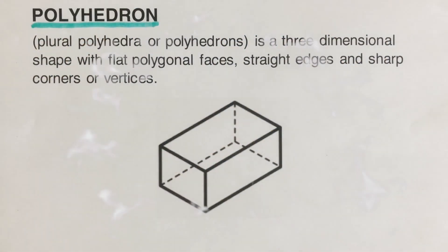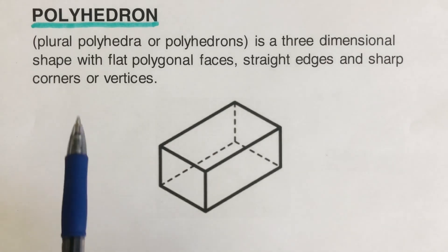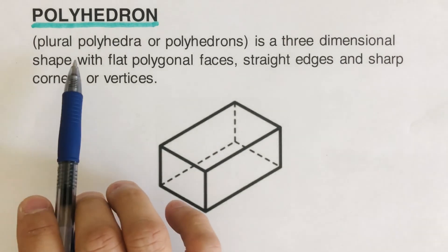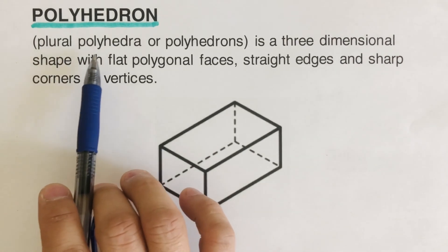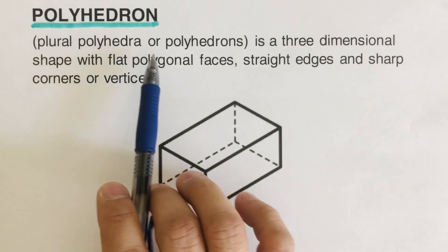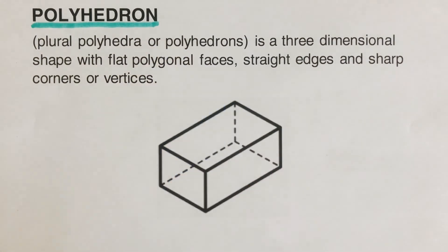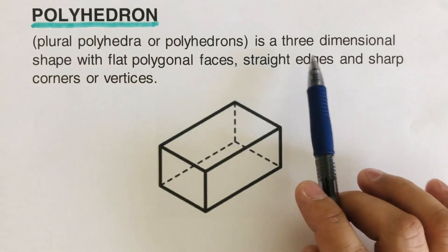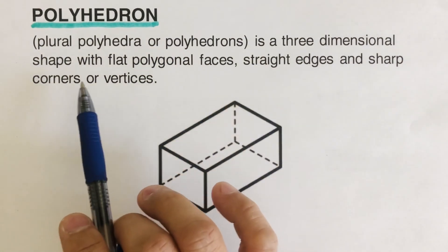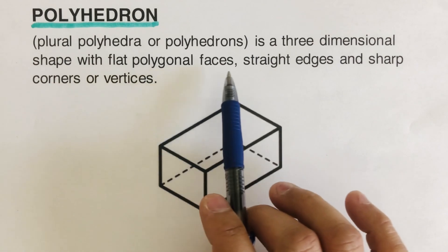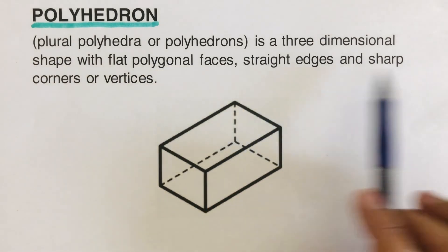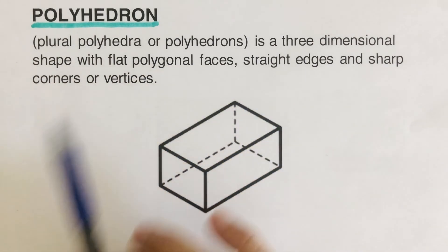Hello everyone! In this video, we are going to determine if a given solid figure is a polyhedron or not a polyhedron. We have here the definition of a polyhedron. The plural for polyhedron could either be polyhedra or polyhedrons — they're just the same. So a polyhedron is a three-dimensional shape with flat polygonal faces, straight edges, and sharp corners or vertices.